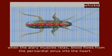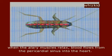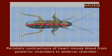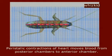When the alary muscles relax, blood flows from the pericardial sinus into the heart. Peristaltic contractions of the heart move blood from the posterior chambers to the anterior chambers.